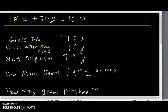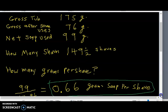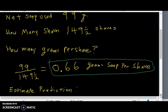For the first question, how many grams per shave? You take your 99 grams of soap used and divide it by 149 and a half shaves. And what was found here was 0.66 grams of soap per shave.